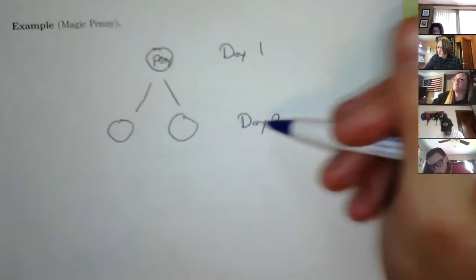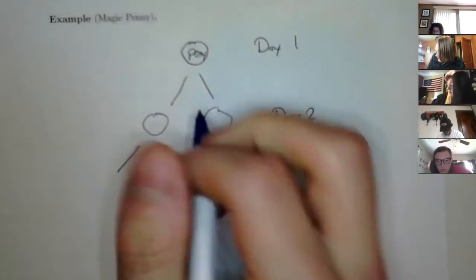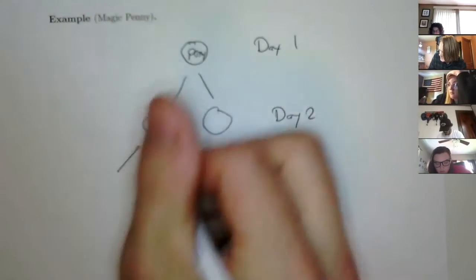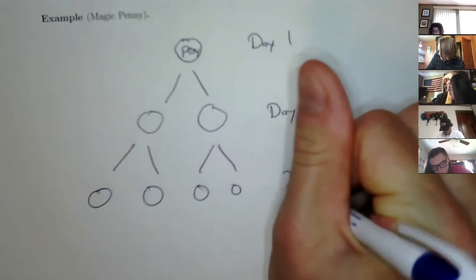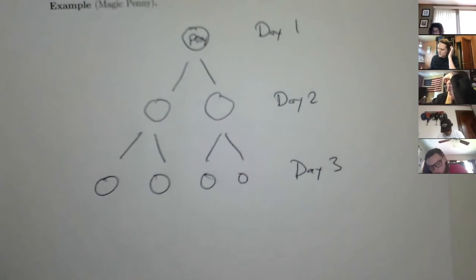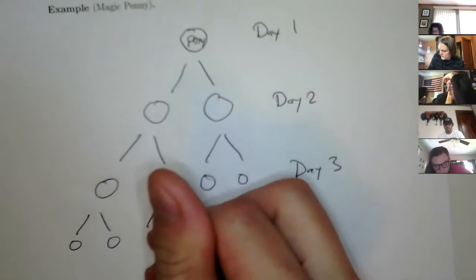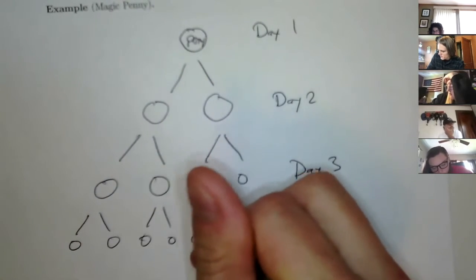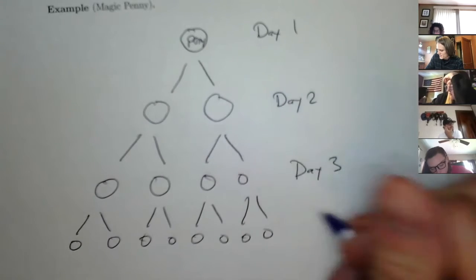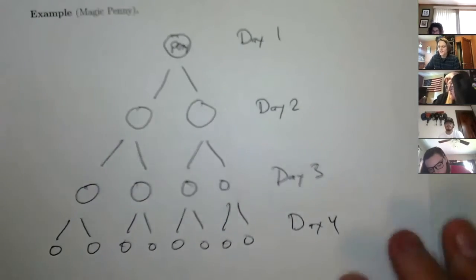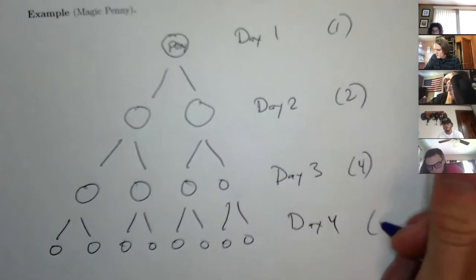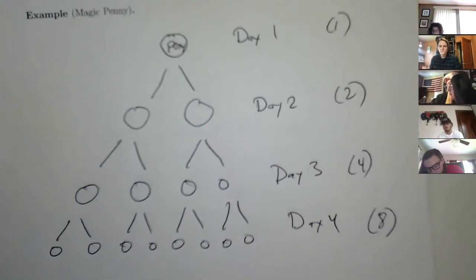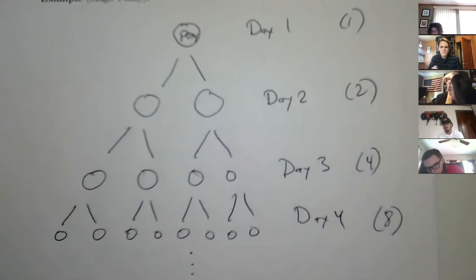Day one I had one. Day two I had two. Day three you'd have four, because this one splits and this one splits. Day four you'd have eight. So: day one is 1, day two is 2, day three is 4, day four is 8. You can keep going — you can see the pattern. You're going to have a lot of pennies.